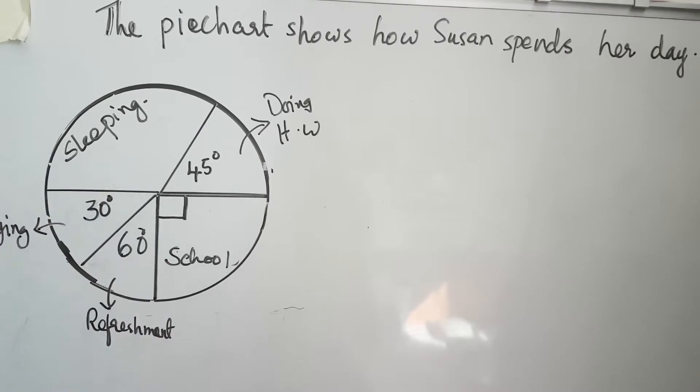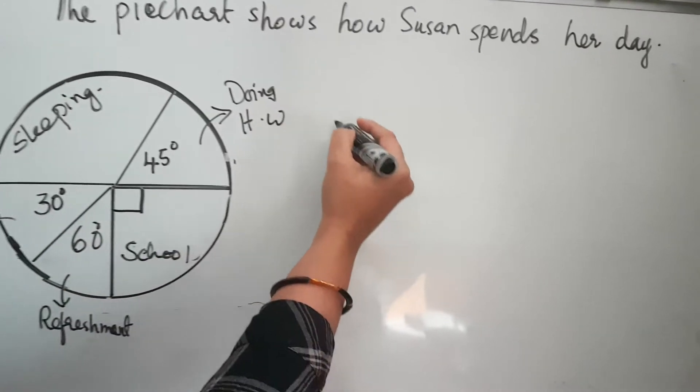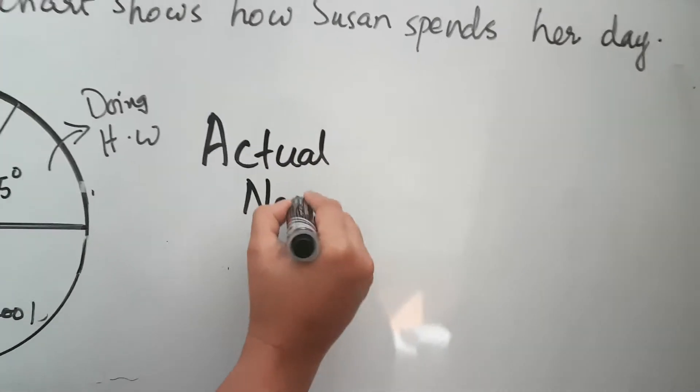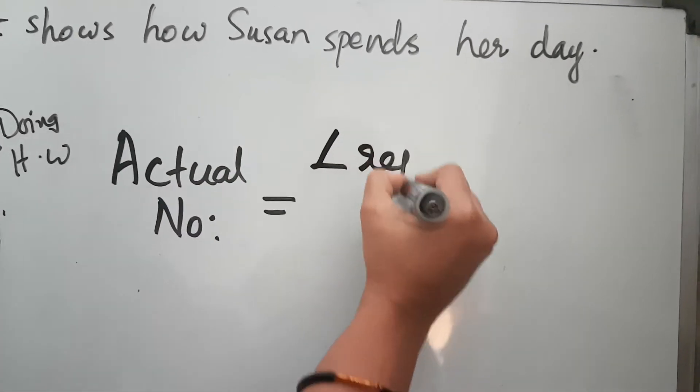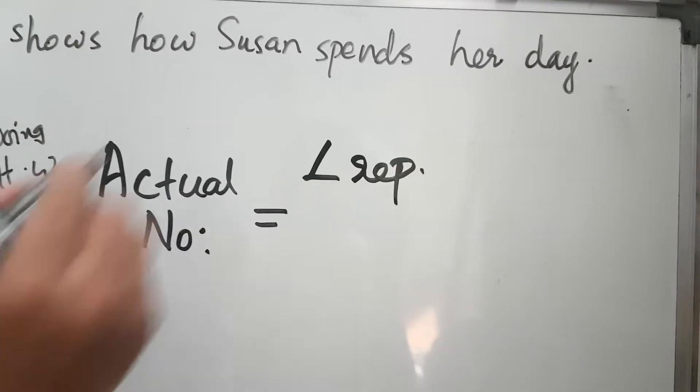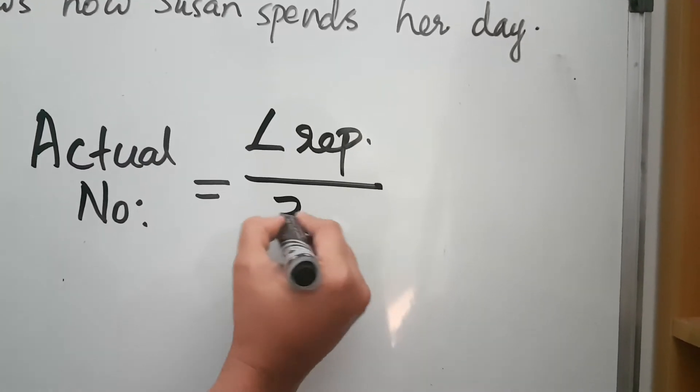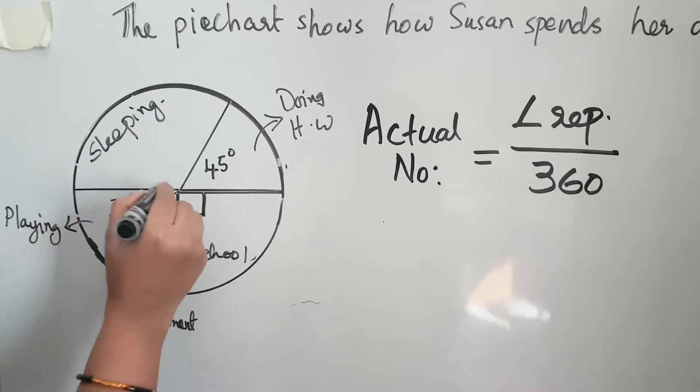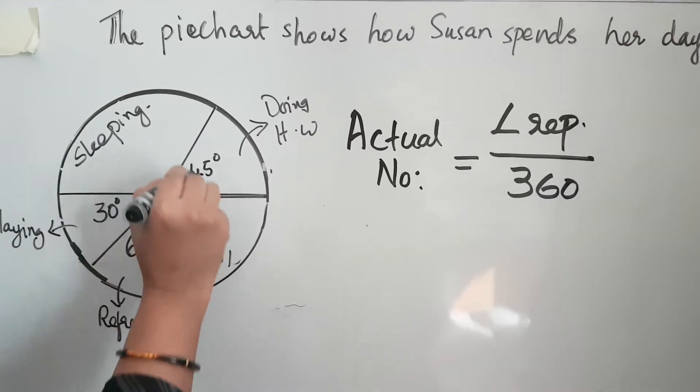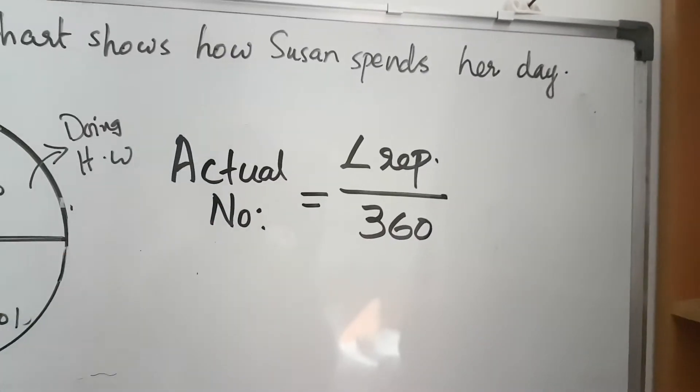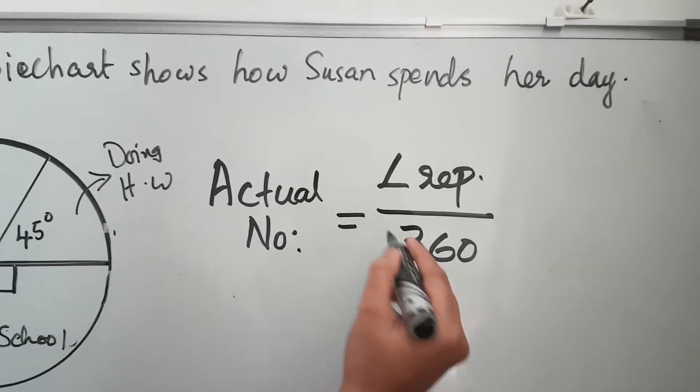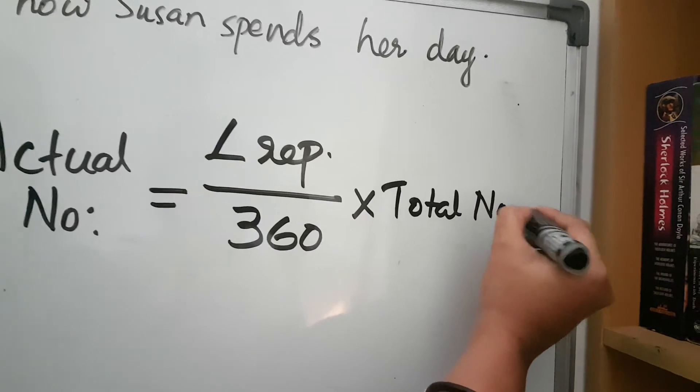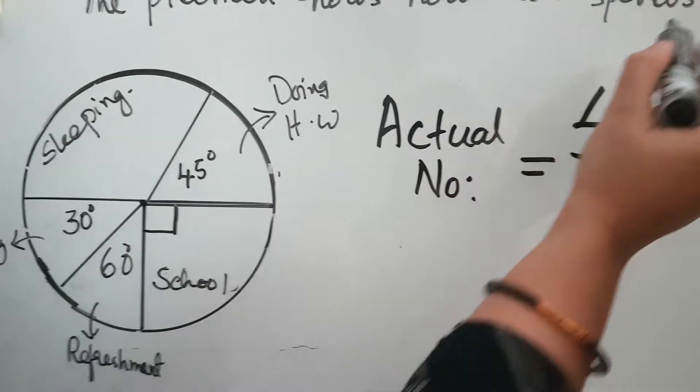To calculate the actual number, we need the angle representing the activity divided by 360. 360 is the angle around the point, because it's the center of a circle and the angle around it is 360 degrees. So, angle representing the activity divided by 360, multiplied by the total number. In this case, the total number—in a day—is 24 hours.